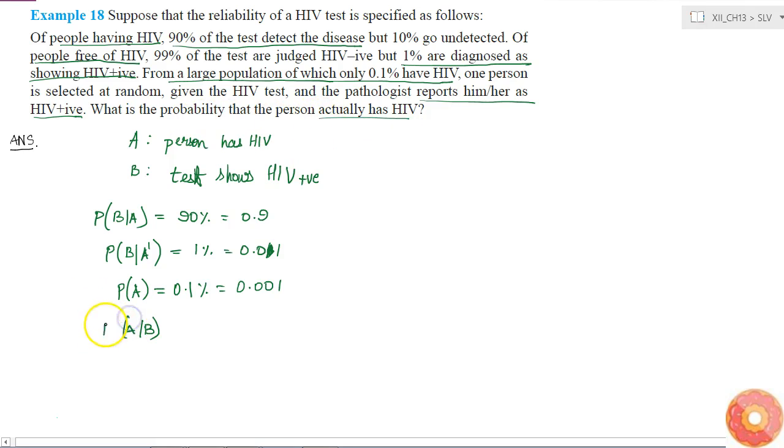That means probability of A given that B is true—that means probability of A given B. This is what we have to find. This we can find using Bayes theorem.